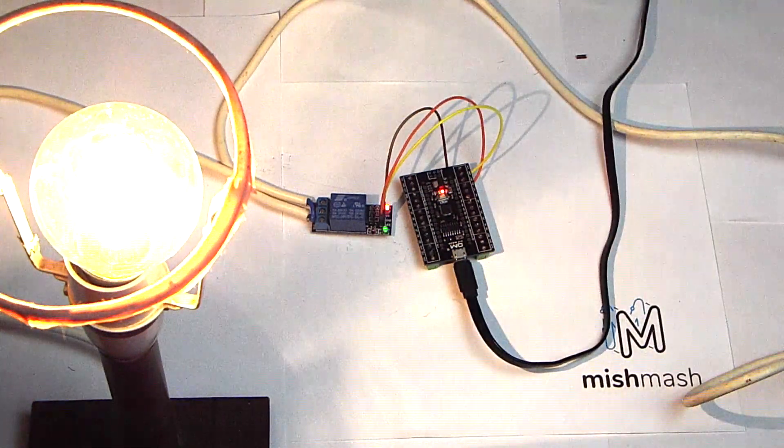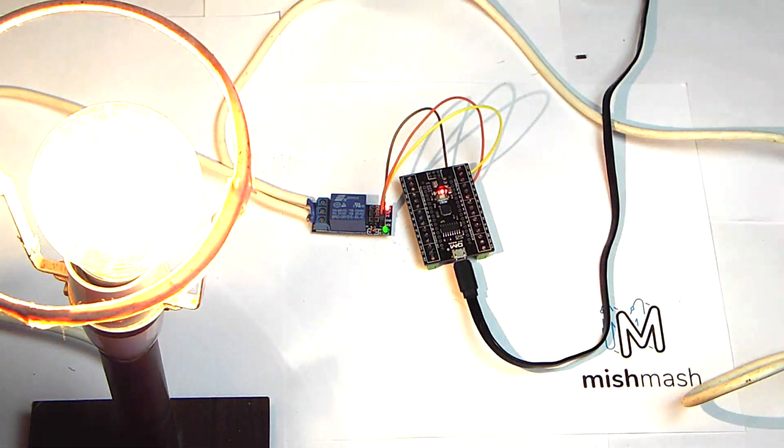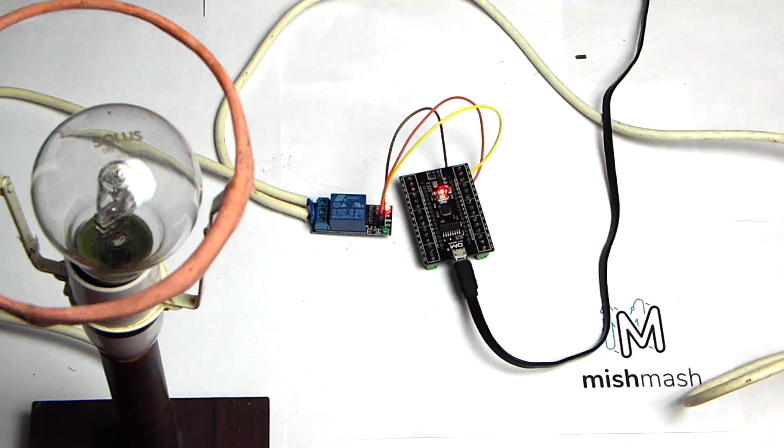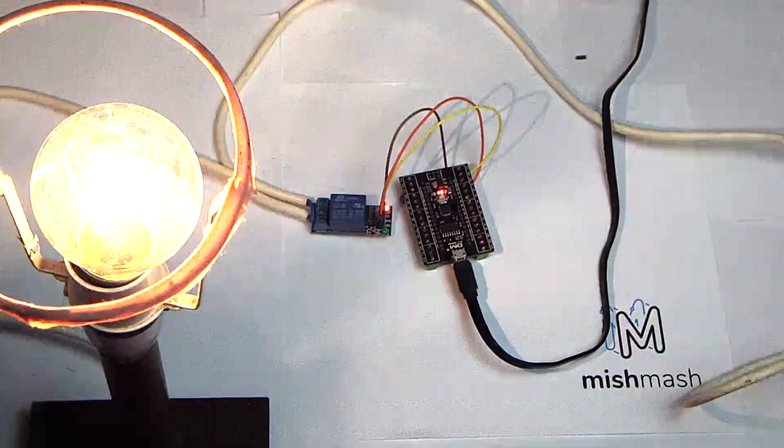You can see the relay begins to work immediately, as the program has already been compiled and uploaded to the Arduino Nano previously in the video. So every 3 seconds, the light switches from on to off, and then off to on.